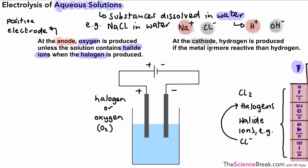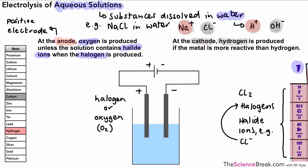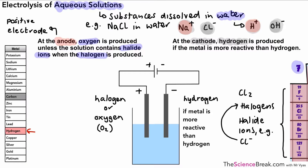At the cathode — the negative electrode — we're going to get hydrogen gas, but only if the metal in the solution is more reactive than hydrogen. We've got our reactivity series here: you can see hydrogen in red, and everything above hydrogen is more reactive. Carbon is in there too but it's not a metal. So we're going to get hydrogen gas if the metal in the solution is more reactive than hydrogen. Remember to ignore carbon because it's not a metal.